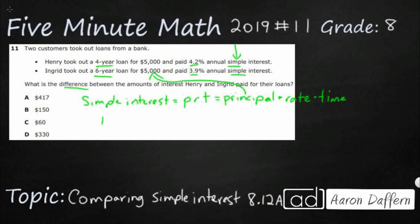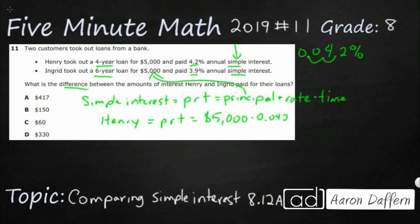Let's see what we've got for Henry. I'm going to use my formula PRT and plug this in. My principle is $5,000. I'm going to multiply that by the rate. We need to turn the percentage into a decimal — my 4.2%, moving the decimal over twice to the left because it's out of 100, gives us 0.042. We need every single one of those digits, so don't round it. And then our time for Henry is four years.